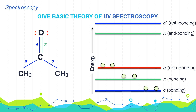For example, in acetone, all single bonds are sigma bonds, while the double bond is a pi bond, and the lone pairs of electrons on oxygen — which don't take part in bonding — are non-bonding electrons. The electron transferred may be a sigma bond electron, a pi bond electron, or a non-bonding electron from a lone pair.